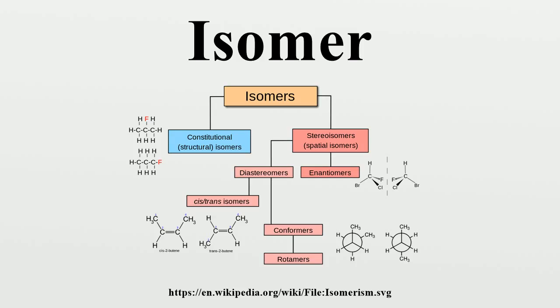An example is when they differ by the position of a proton, such as in keto-enol tautomerism, where the proton is alternately on the carbon or oxygen.